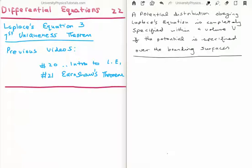So what we're going to do here is prove a very important theorem, the first uniqueness theorem. It can be a bit long winded to write it down, so I've written it on the right hand side of your screen there. Just to read it: A potential distribution obeying Laplace's equation is completely specified within a volume V if the potential is specified over the boundary surfaces.